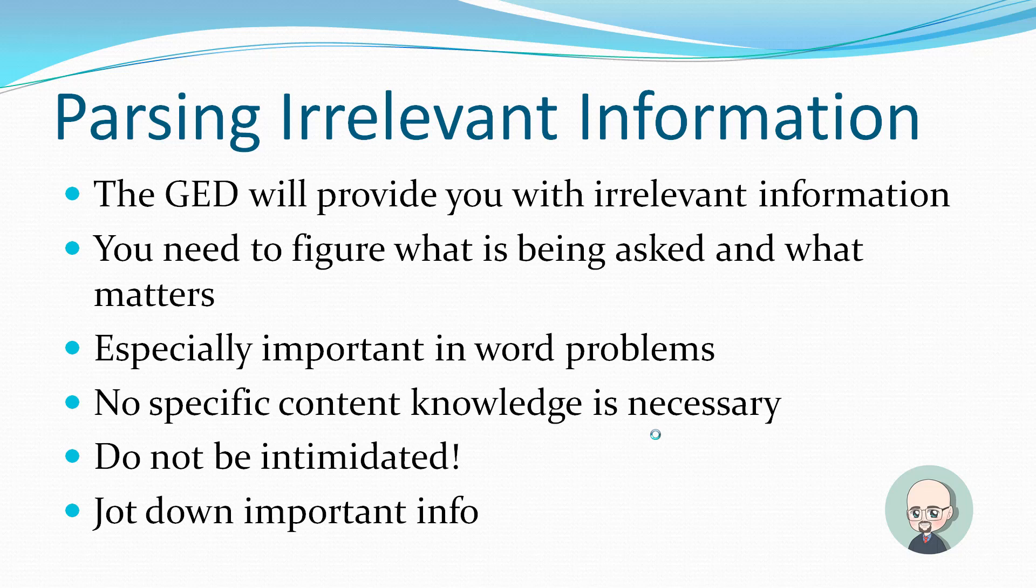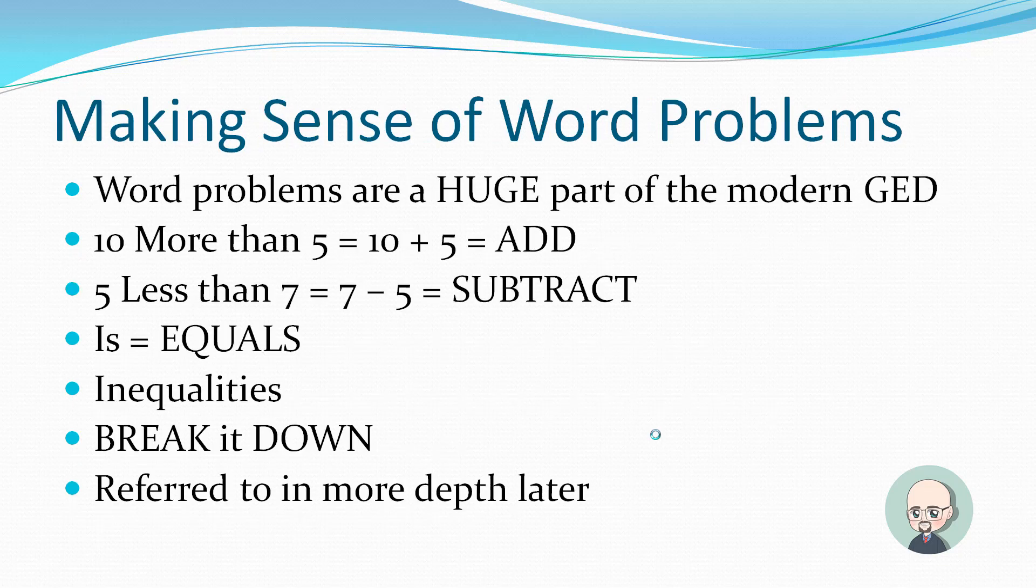Parsing irrelevant information. The GED will provide you with irrelevant information often. You need to figure what is being asked and what matters. This is especially important in word problems. No specific content knowledge is often necessary. So they may talk about rockets and airplanes and all sorts of fantastical nonsense. It doesn't matter. You don't need to know a thing about it. You just need to figure out what are the important numbers. How can I create an equation? How can I create a problem that I can solve with this? And then you solve it. Look at the answer choices. Do not be intimidated. Jot down important info. A lot of people are reluctant when they're doing math problems to actually write stuff down. Write things down. If you try and do things in your head, a lot of times you're going to get it wrong. So don't.